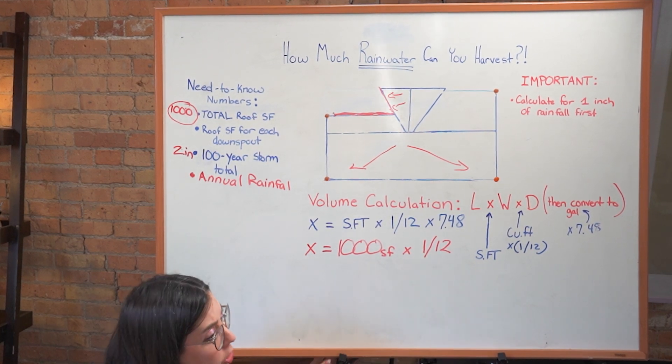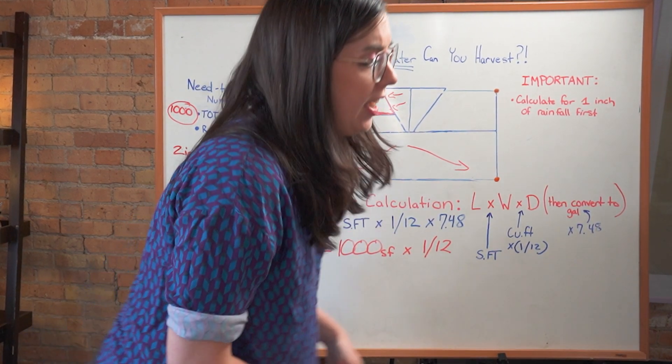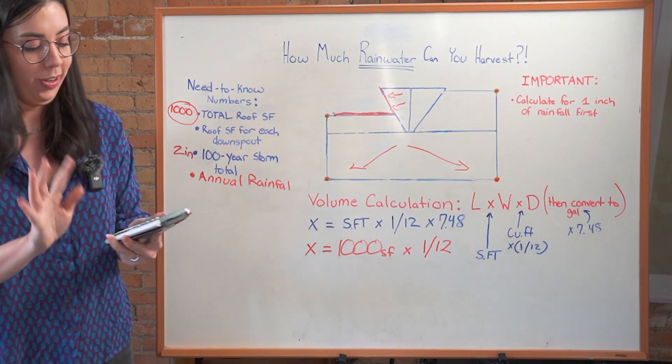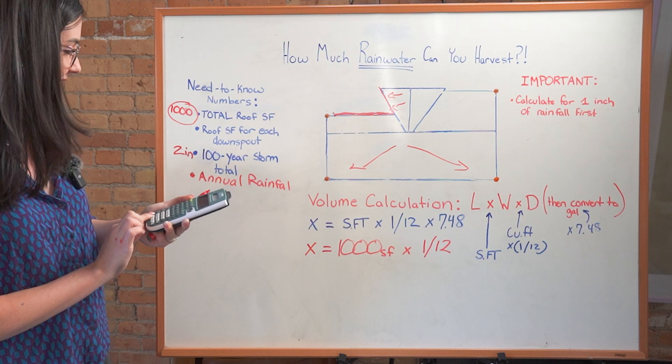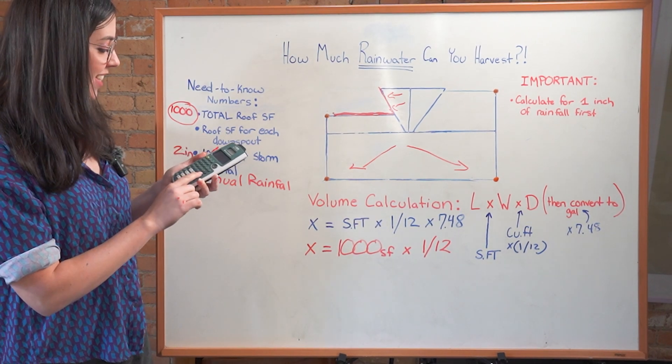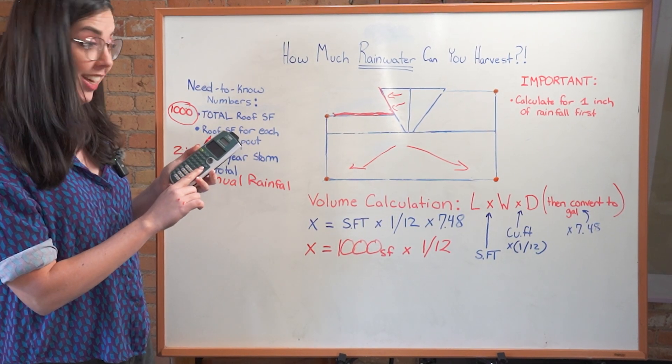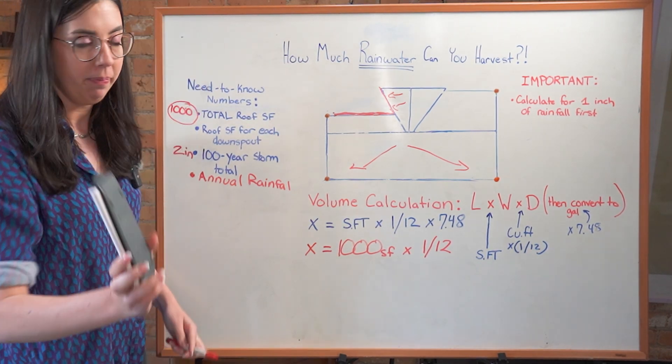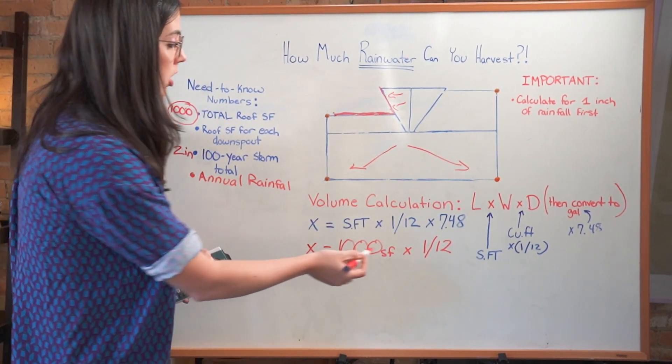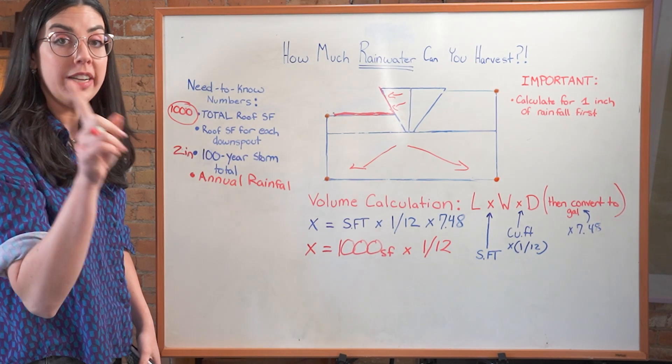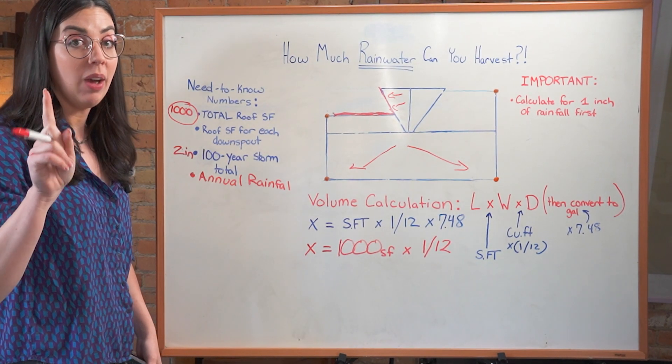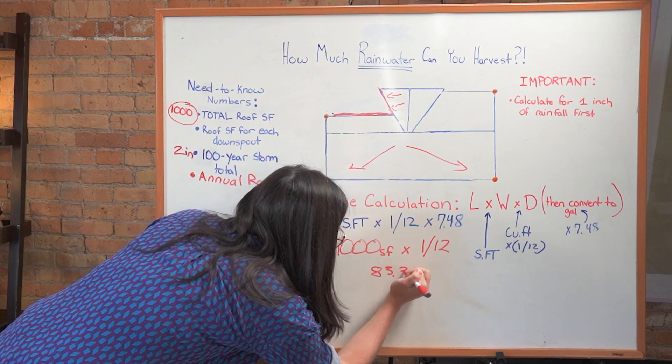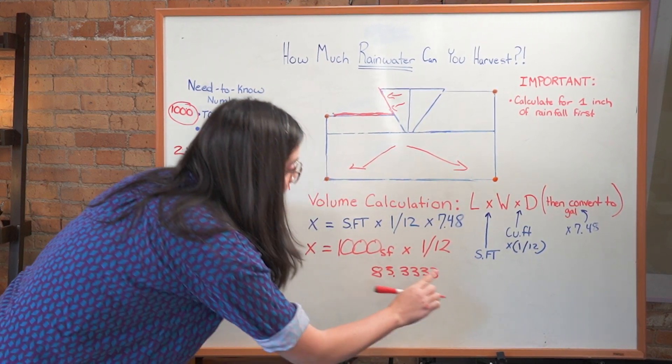I should have done it ahead of time. Let me grab my calculator. I already know the answer to this one, but I'm trying to just go with you through the process. 1000 square feet times 1 divided by 12. 83.333333 blah, blah, blah. That is the cubic feet of water when it rains one inch. And it's important to remember that one inch number.